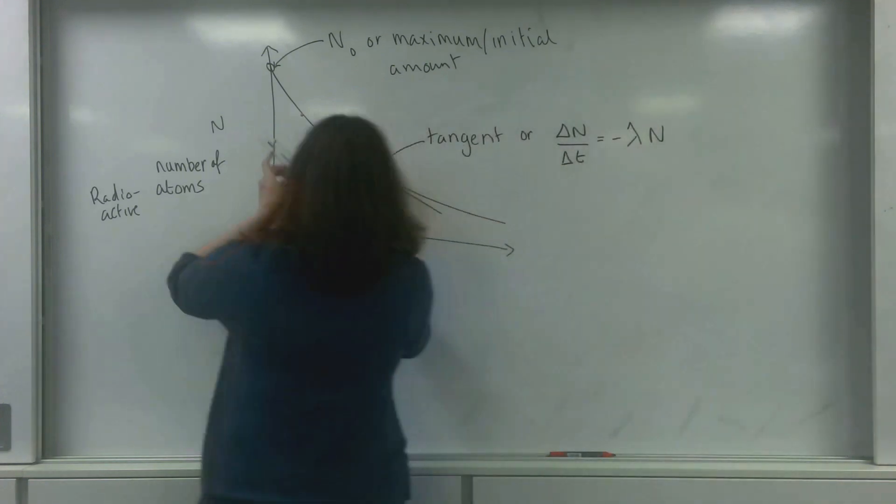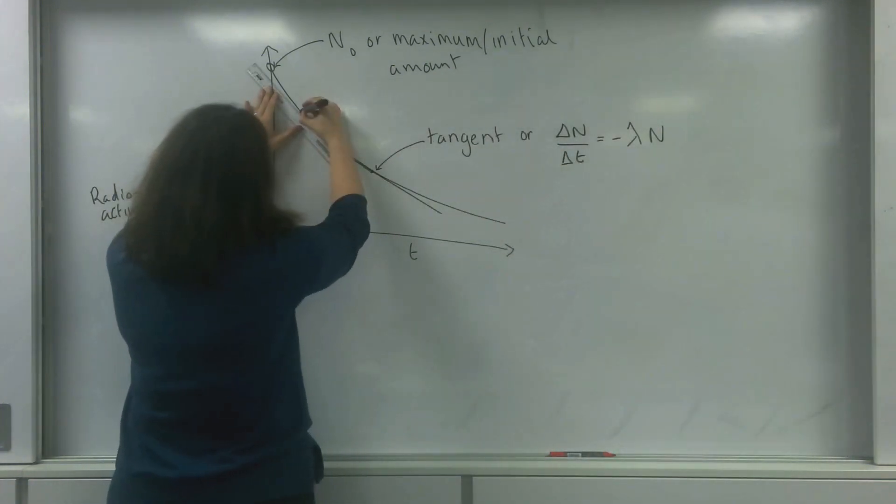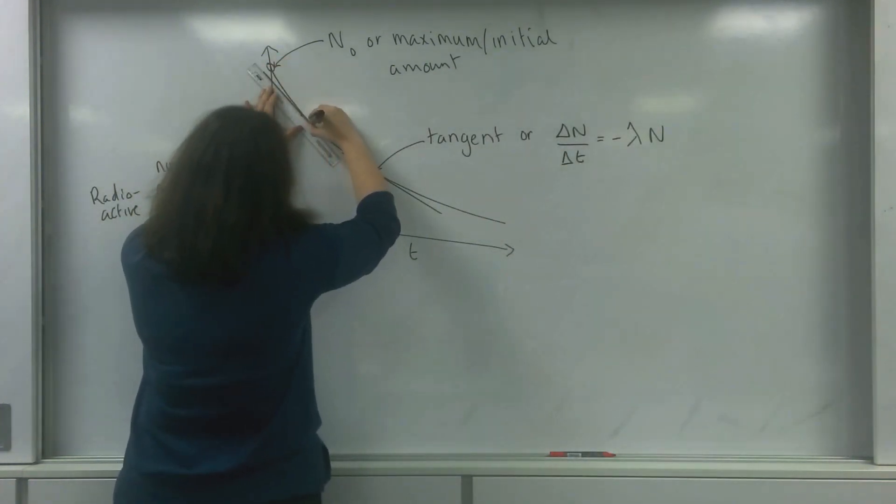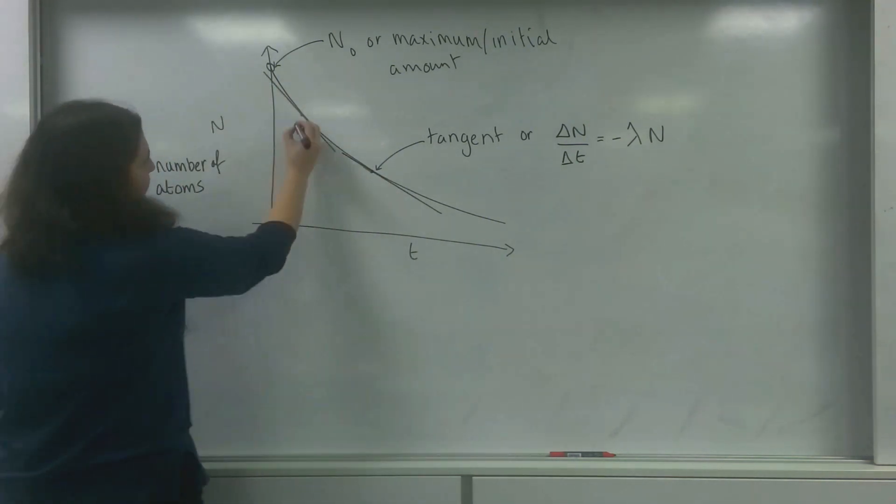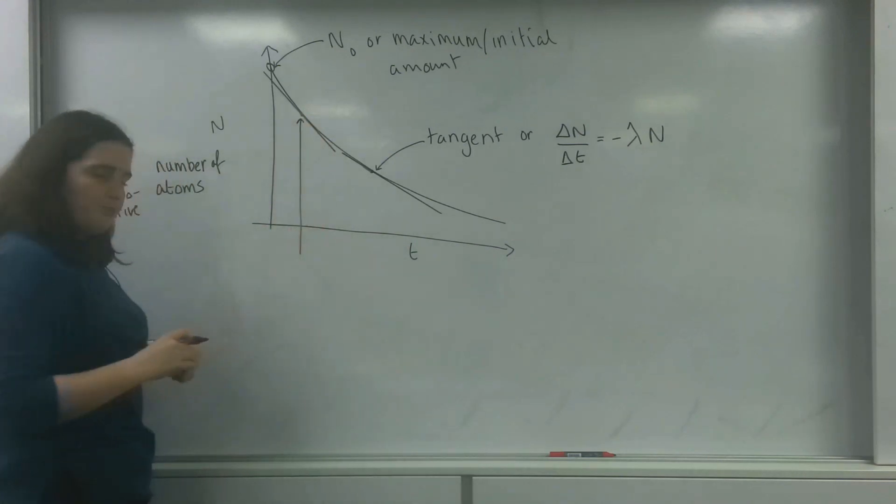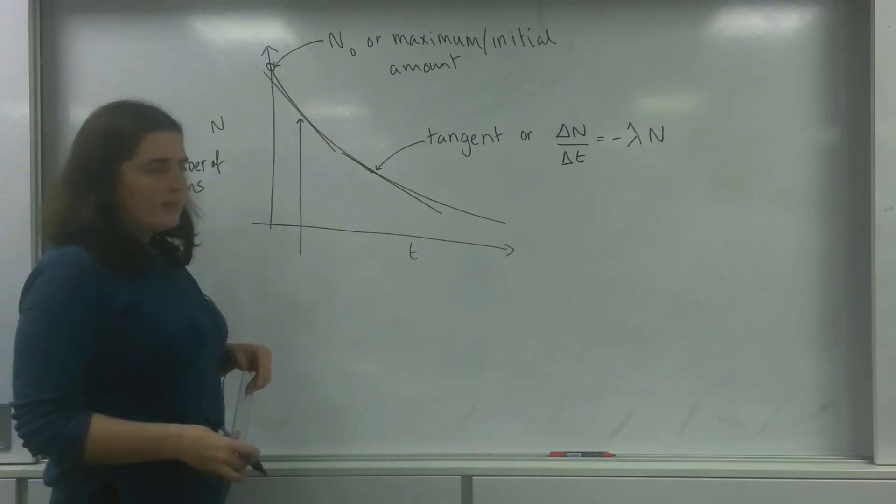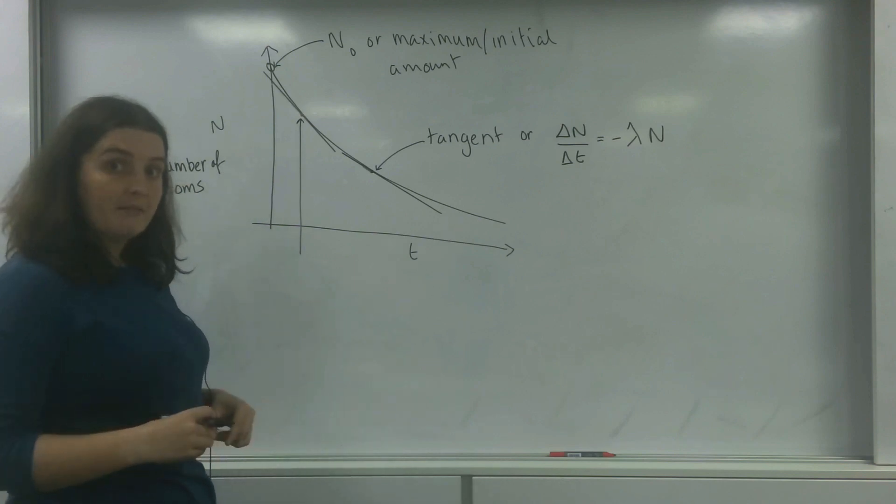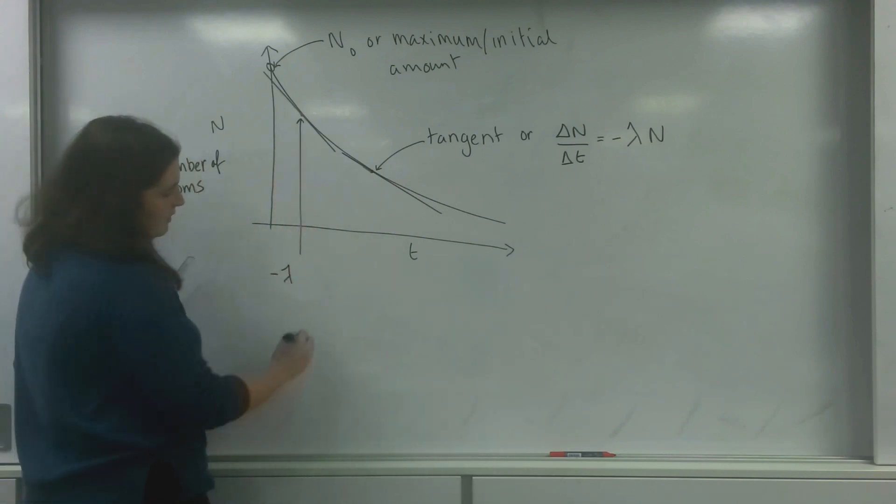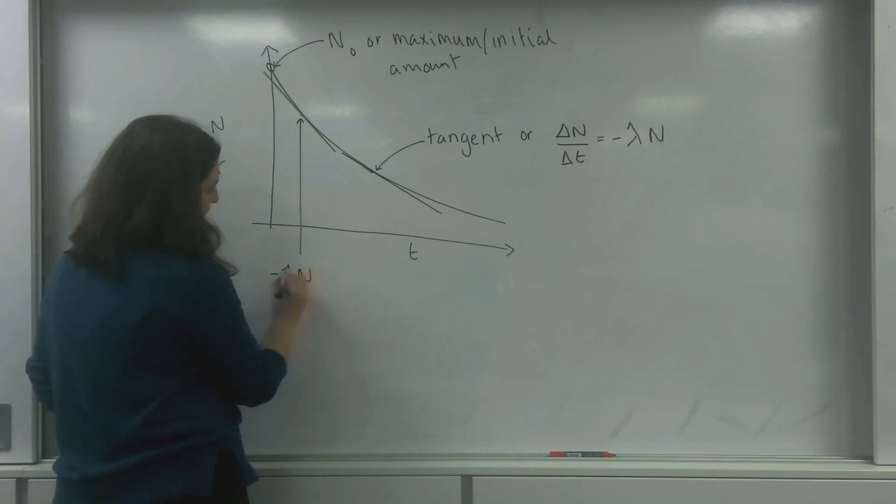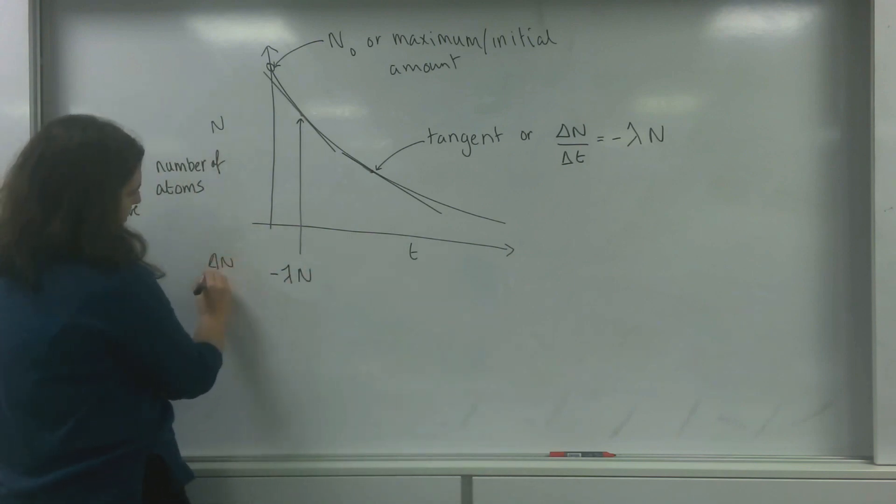Now I could take another point here and I could take a gradient at this point. What's really interesting is for this value of n, which is bigger, my gradient still has this same constant over here. So this point here is minus lambda times by n, and that is my change in n over my change in t for that position there.